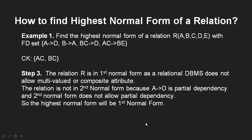Checking first normal form: every attribute should be a simple attribute, meaning no multi-valued or composite attributes. Relational DBMS does not allow multi-valued or composite attributes, so every relation is in first normal form. Checking second normal form: there should be no partial dependency, meaning no subset of a candidate key determining a non-prime attribute. Here, A is a subset of candidate key AC and it is determining a non-prime attribute, so this is a partial dependency. Therefore the relation is not in second normal form, and the highest normal form is first normal form.